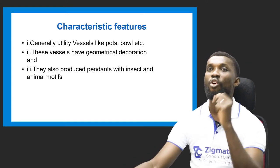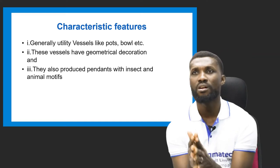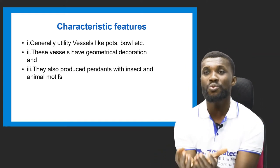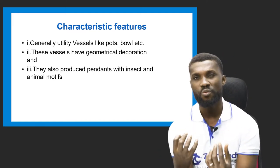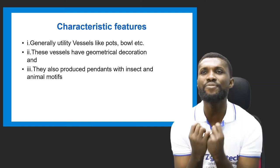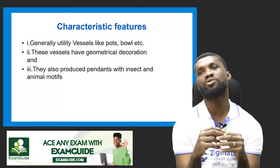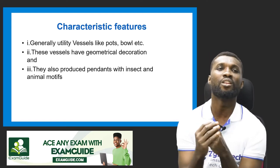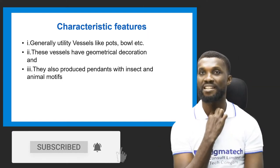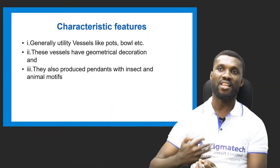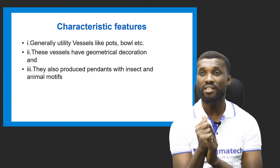Now let's go over to the characteristic features of the Igbo-Ukwu art. Some of the general characteristic features are: they produce utility vessels such as cups, plates, pots, and bowls — all made with bronze with intricate designs. These vessels have geometrical decoration on them. They also produce pendants with incense and animal motifs — both necklace pendants and wall pendants with animal motif designs.